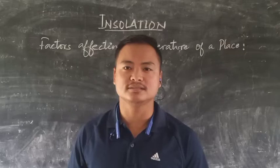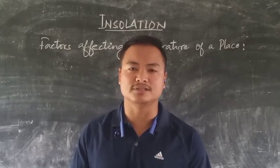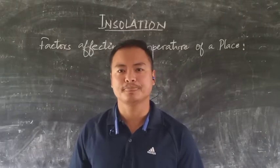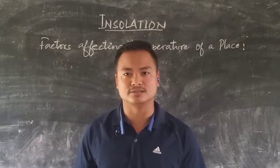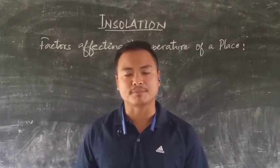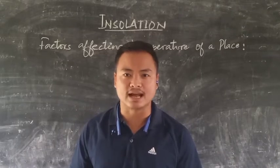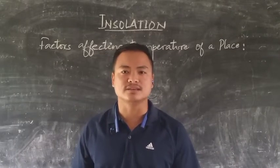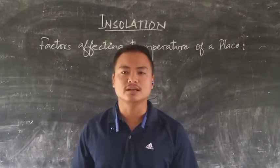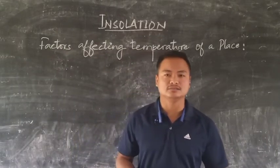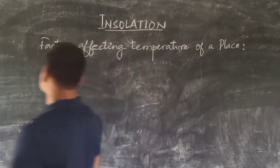As discussed in an earlier class, we on Earth don't receive the same amount of insolation. That is the reason why there is a variation in temperature conditions. There are places which receive insolation for a longer time period, while there are also places which receive insolation at the minimum. So here we will discuss how the temperature changes in different places.